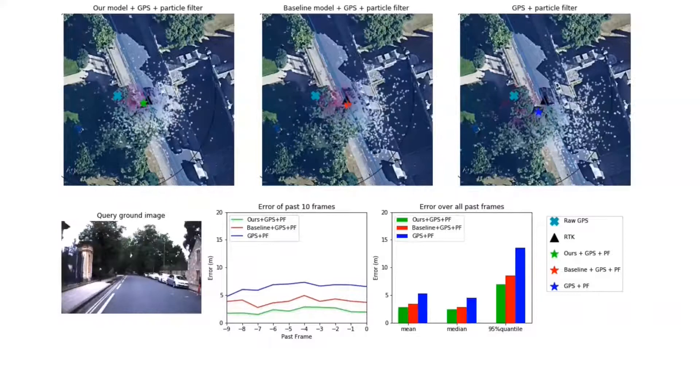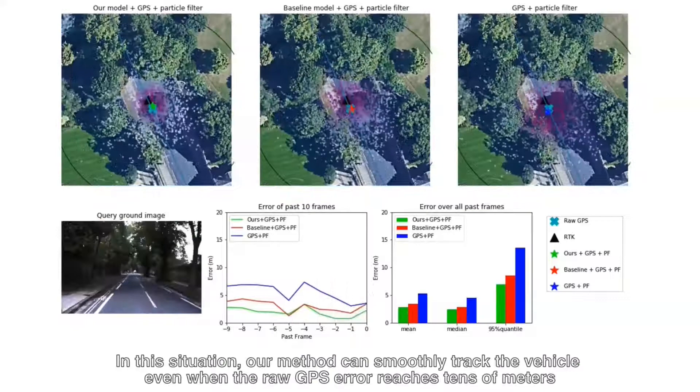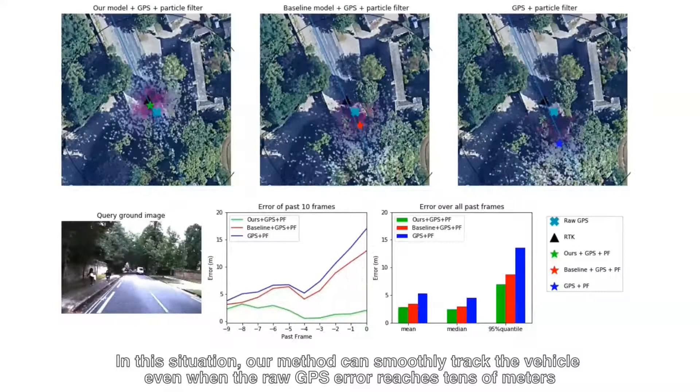The raw GPS positioning inevitably jumps when the signal is partially blocked or the multipath effect occurs. In this situation, our method can smoothly track the vehicle even when the raw GPS error reaches tens of meters.